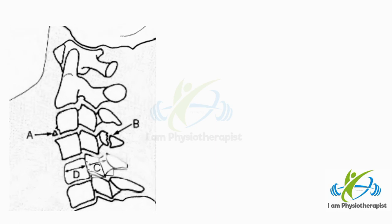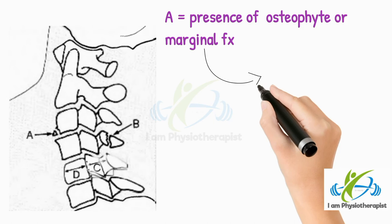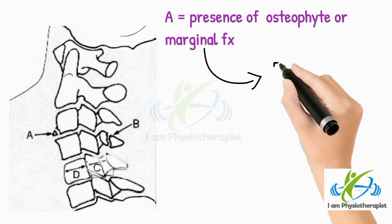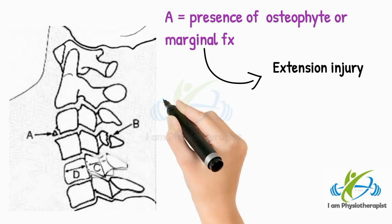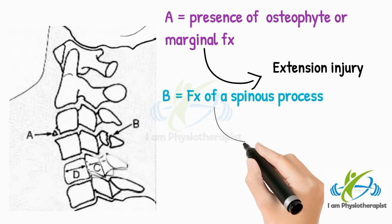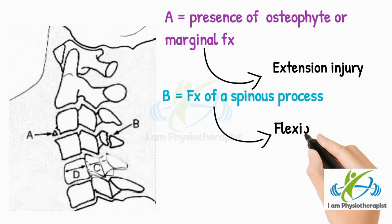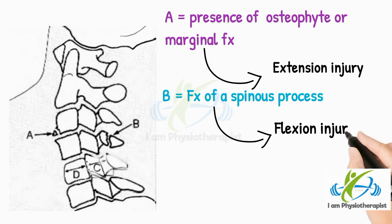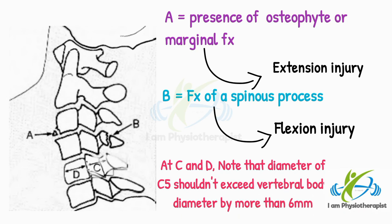In this radiograph, Point A shows the presence of an osteophyte or marginal fracture, suggestive of an extension injury of the neck. Point B shows a fracture of a spinous process, suggestive of a flexion injury of the cervical spine. At points C and D, note that the diameter of the spinal canal at C5 should not exceed the vertebral body diameter by more than 6 mm.